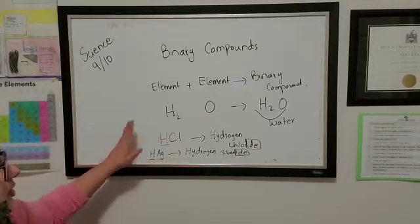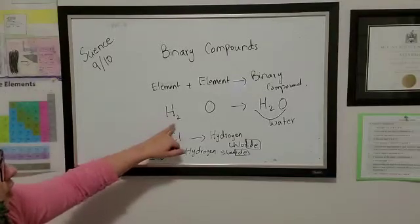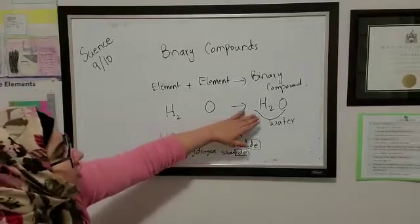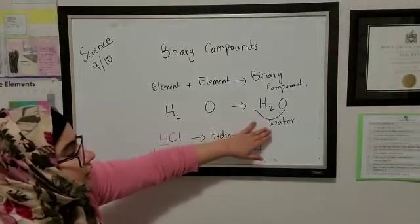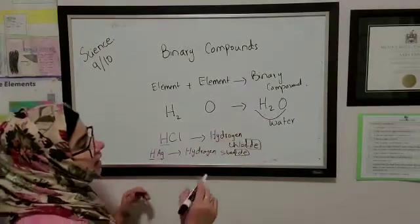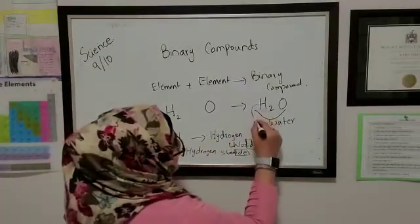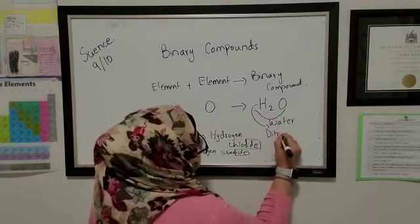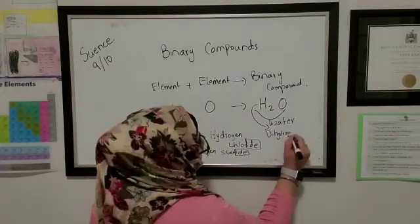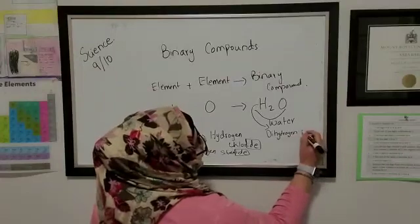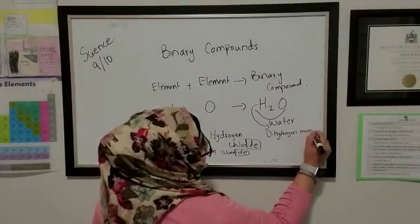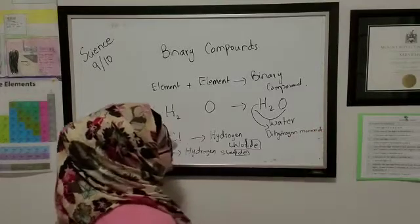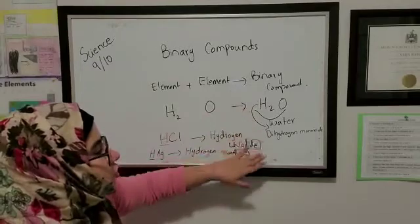Again, some compounds have what you call the number of atoms. So how do we name that? Although H2O is a chemical formula for water, the actual chemical name for H2O is dihydrogen monoxide. So this is the chemical name for H2O.